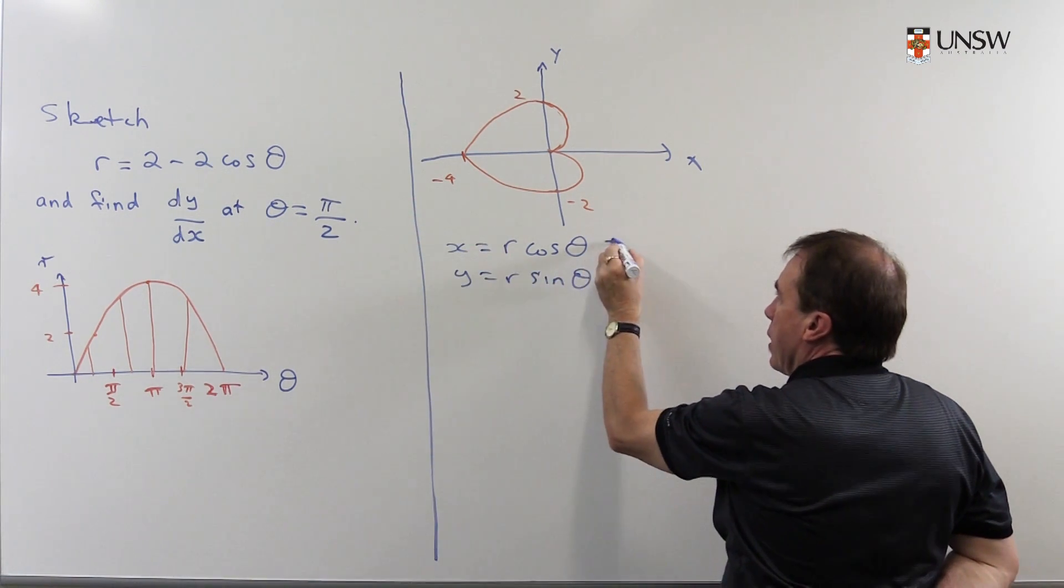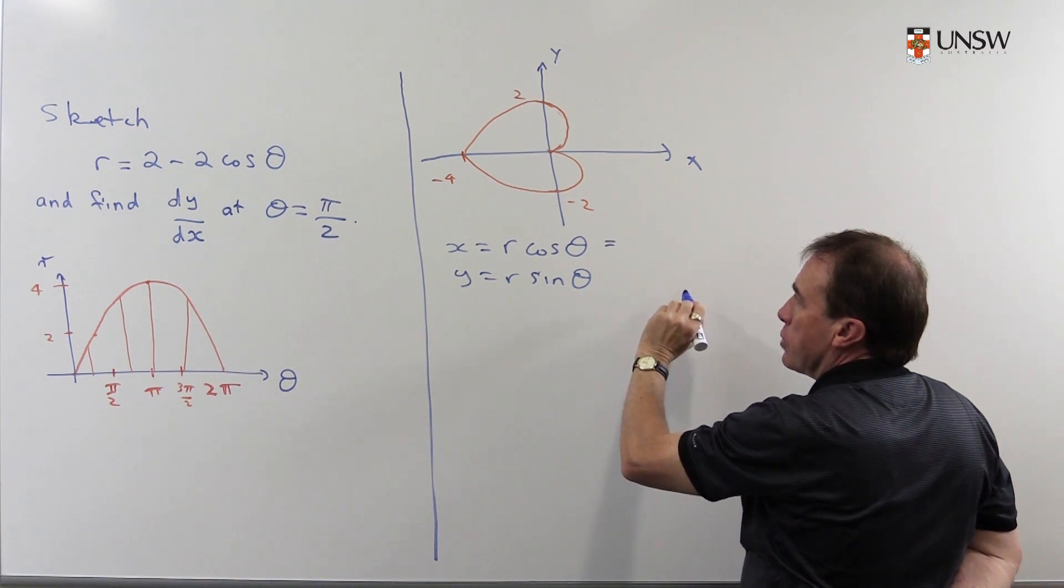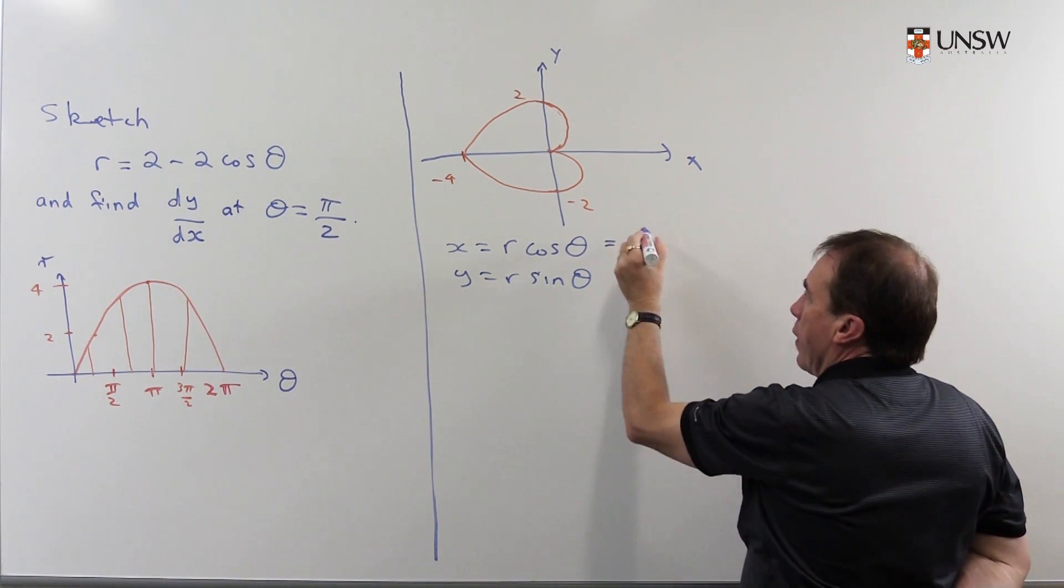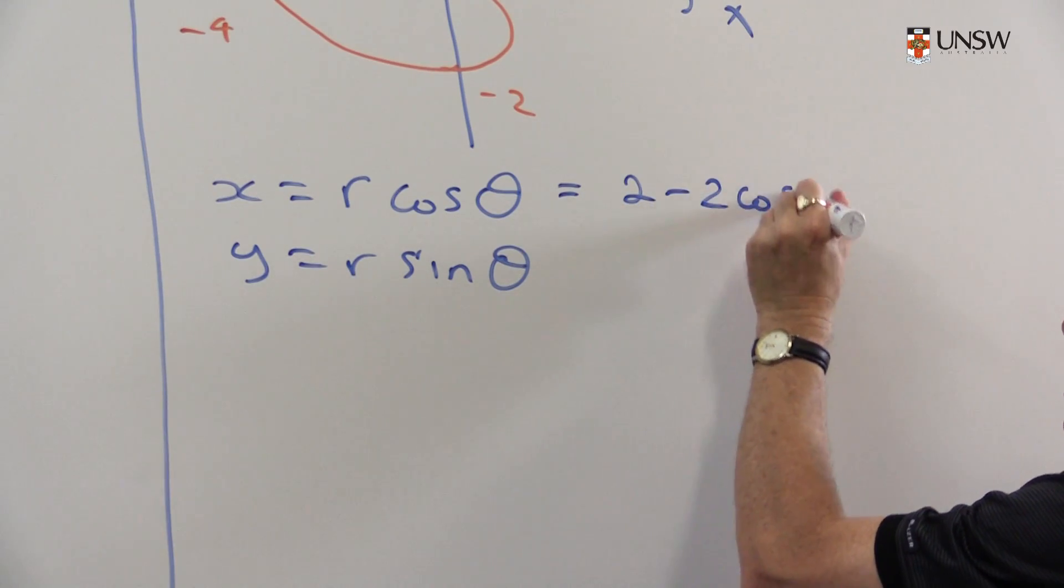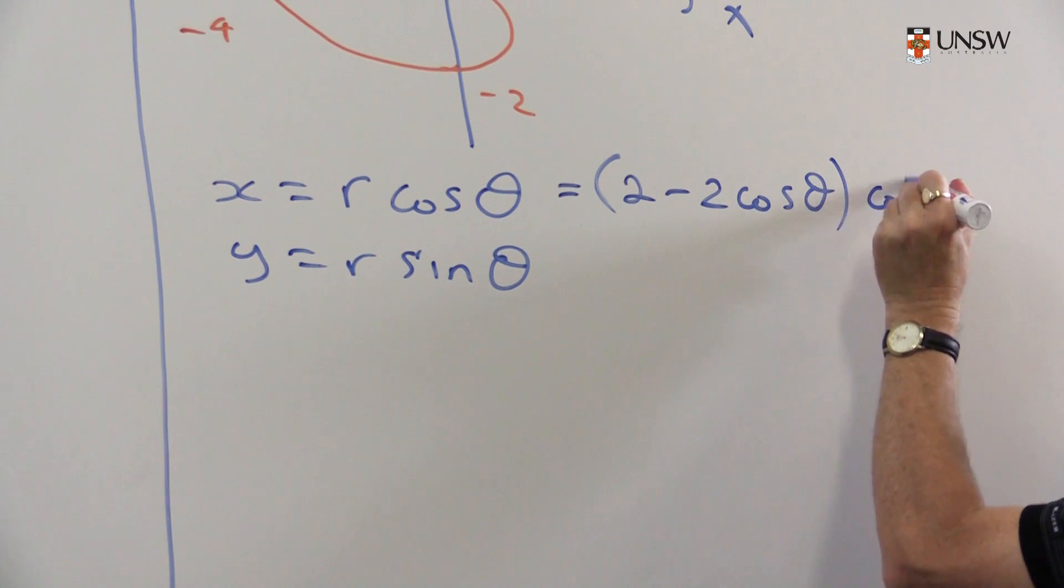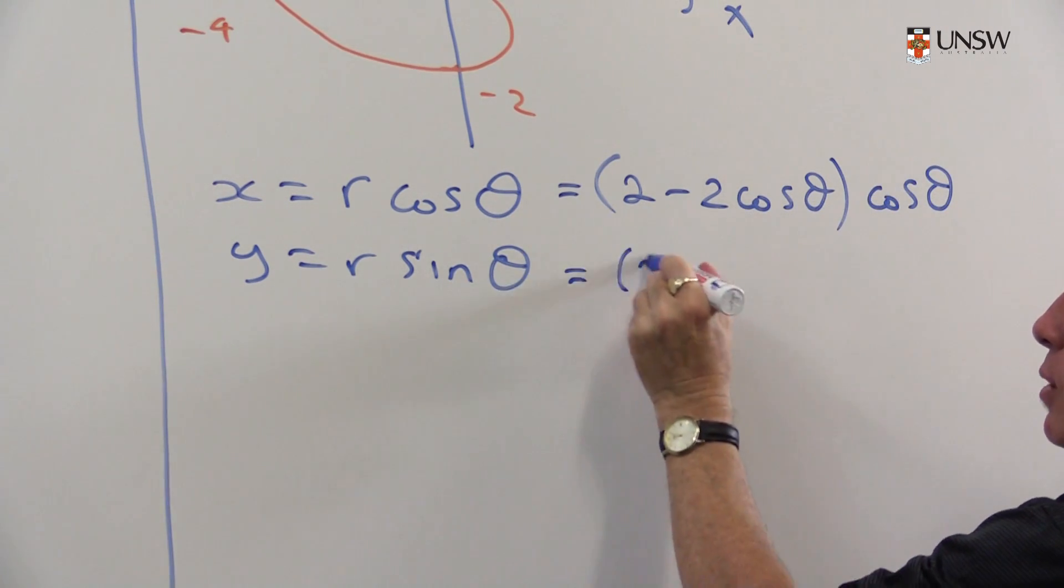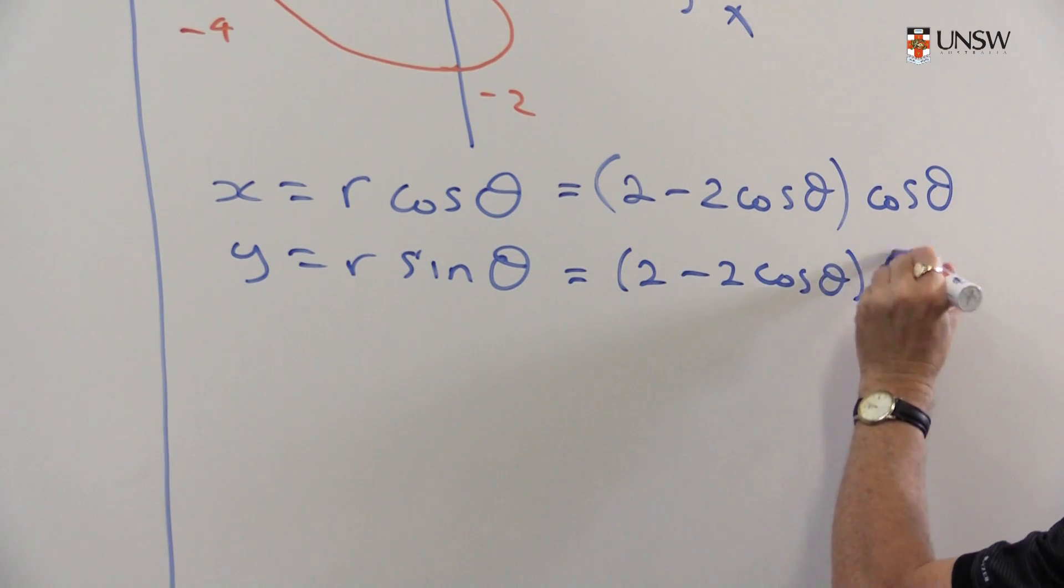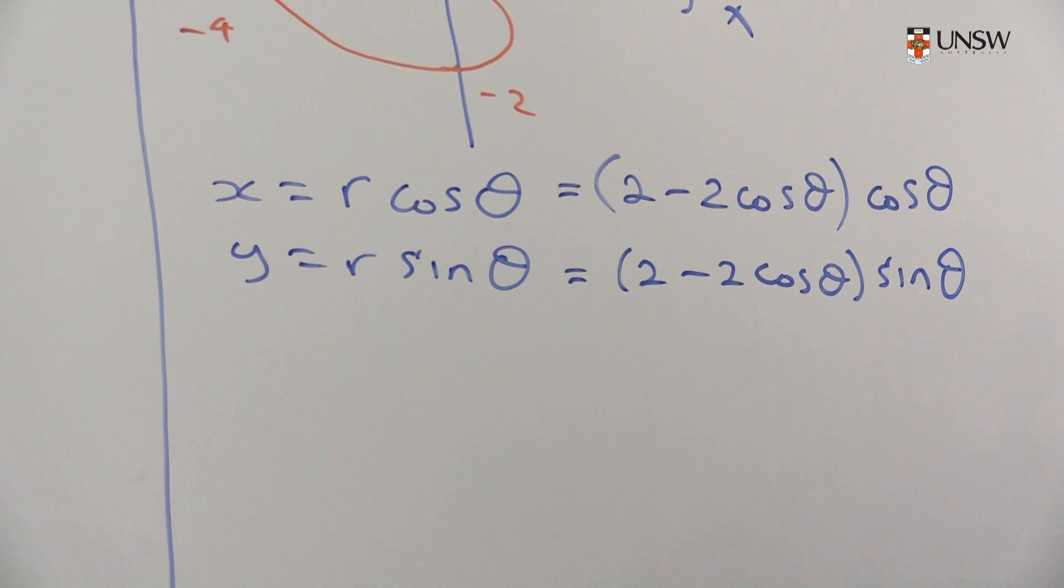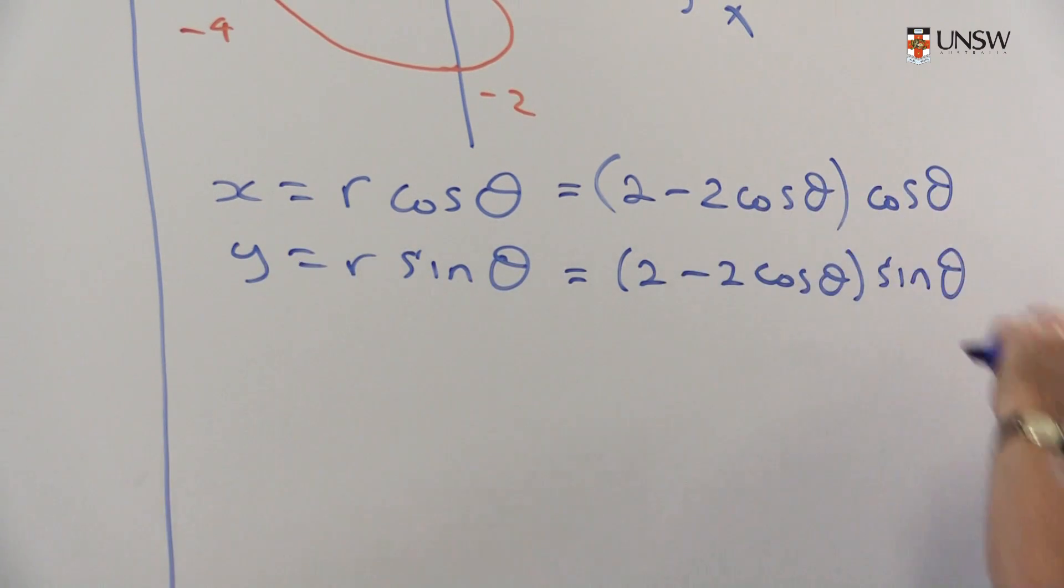I know the value of r for this particular curve, so I can replace r with 2 - 2cos(θ). That'll give me x = (2 - 2cos(θ))cos(θ) and y = (2 - 2cos(θ))sin(θ). So I now get expressions for x and y in terms of θ.